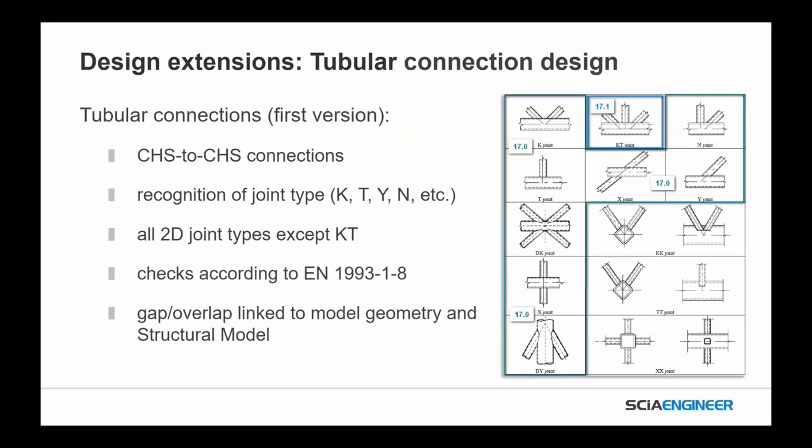Additional design extensions: we've added tubular connections. This is the first release of these tube connections — currently circular hollow shaped sections. We have recognition of the joint type, all 2D joints except for the KT joint, and checks according to the Eurocode. We also plan to add a few more in the 17.1 version, which will be out sometime in the fall.